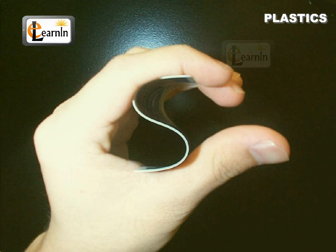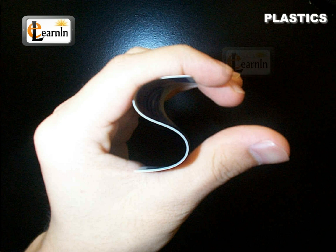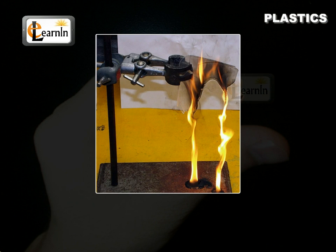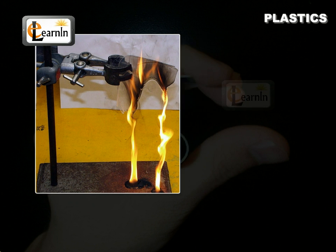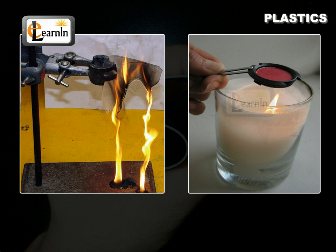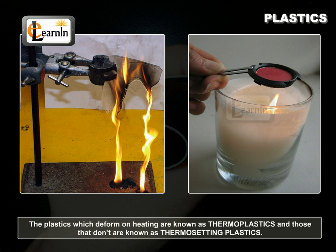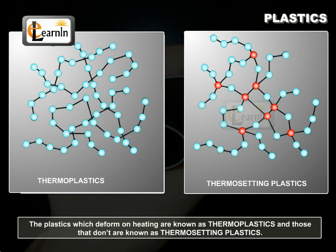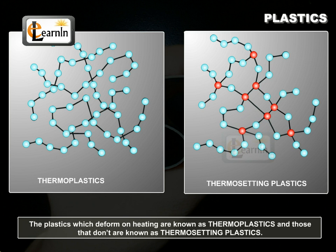But all plastics cannot be bent or moulded to change their shape. Some plastics deform on heating and some do not. The plastics which deform on heating are known as thermoplastics, and those that don't are known as thermosetting plastics.